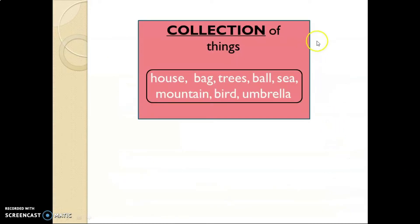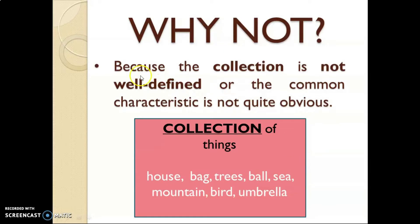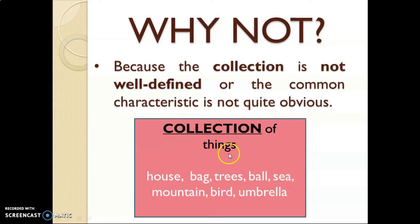Now we have here a collection of things and the objects are house, bag, trees, ball, sea, mountain, bird, and umbrella. This is a collection of things, however it is not a set. Why? Because the collection is not well-defined — the common characteristics are not quite obvious. Even though it is a collection, we cannot easily identify what their common characteristics are, so it is not a set.